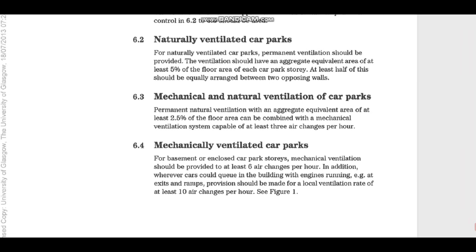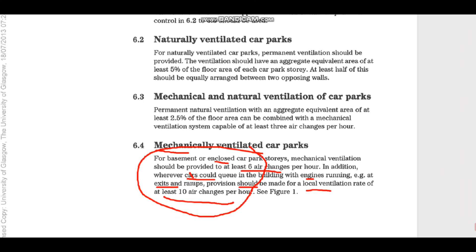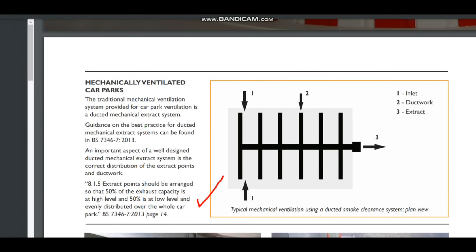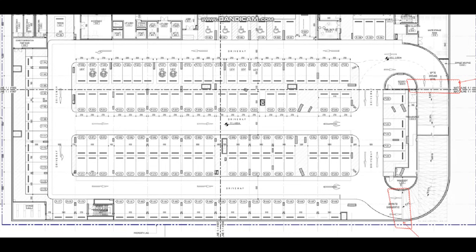Regarding air change per hour, from the same standard BS 7346: for basement or enclosed car park stories, mechanical ventilation should provide at least 6 air changes per hour. Additionally, wherever cars could queue in the building with engines running - such as at exit and ramp areas - provisions should be made for local ventilation of at least 10 air changes per hour. Most countries in the Middle East such as Qatar and UAE civil defense also recommend 6 ACH for normal mode and 10 ACH for fire mode.